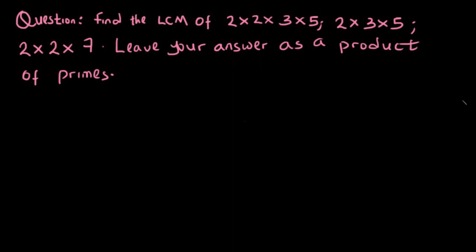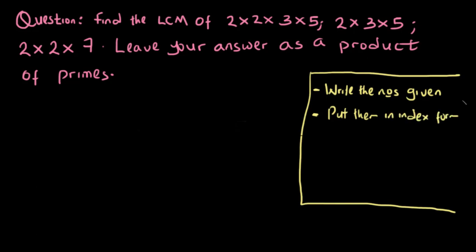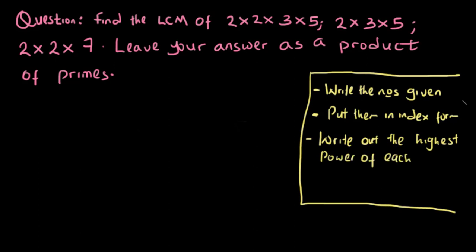To make it very easy for you to solve a question like this, I'm going to list the steps. Step 1: write the numbers given. Step 2: put them in index form. Step 3: write out the highest power of each number. Step 4: multiply.